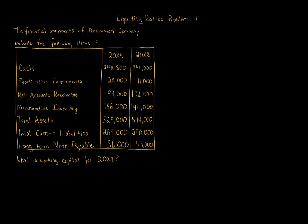Liquidity Ratio is Problem 1. The financial statements of Persimmon Company include the following items. There's a table presenting the information for 20x9 and 20x8.